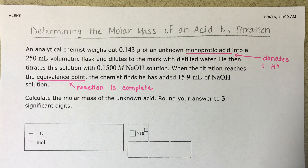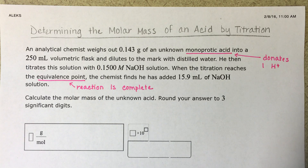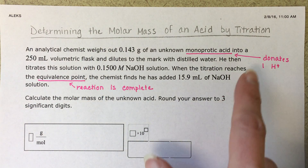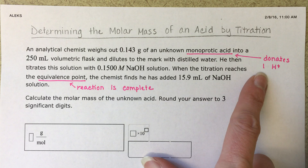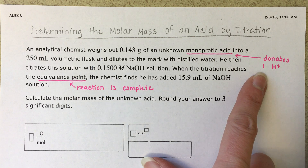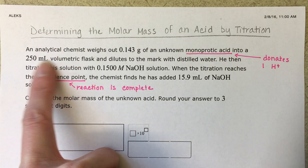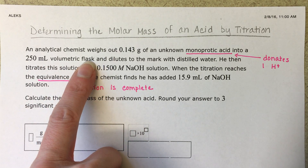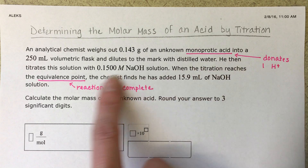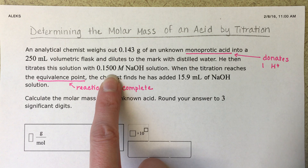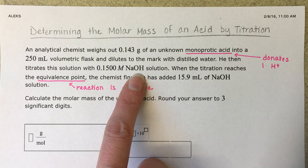We have a 0.143 gram sample of an unknown monoprotic acid. Monoprotic acid means that it's a type of acid that only donates one hydrogen, H-plus, in the acid-base reaction. That acid is added to a volumetric flask, which turns out to be information that we don't need to solve the problem. We then titrate the solution — which means react it — with a 0.150 molar sodium hydroxide solution.